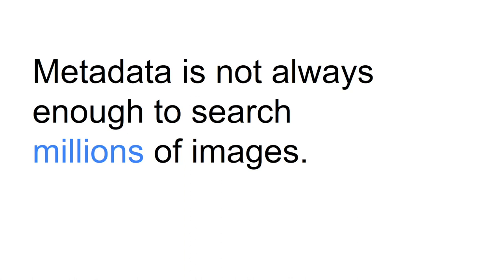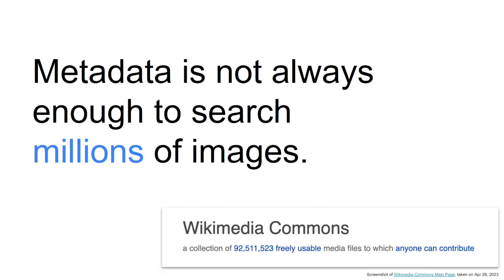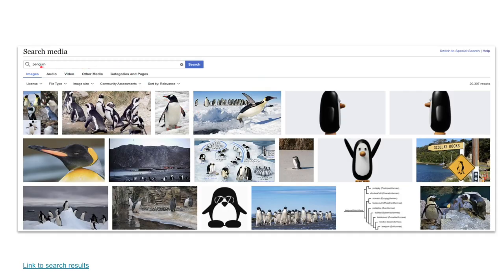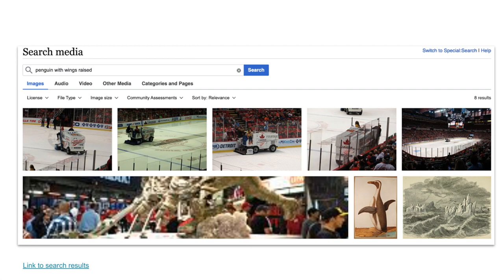Metadata is not always enough when you want to search a collection of millions of images. Consider the Wikimedia Commons, one of the largest openly available collections of media on the internet. Say you want to search for a penguin in this collection — you get around 20,000 results of cute penguins. But if you try to narrow it down to find a penguin with wings raised, you get only 8 results,